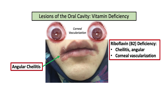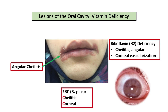Deficiencies in vitamin B2, or riboflavin, can cause angular colitis, but the associated symptom of corneal vascularization will be a key identifying feature. It helps to remember 2BC — remember the two C's, colitis and corneal, for vitamin B2.